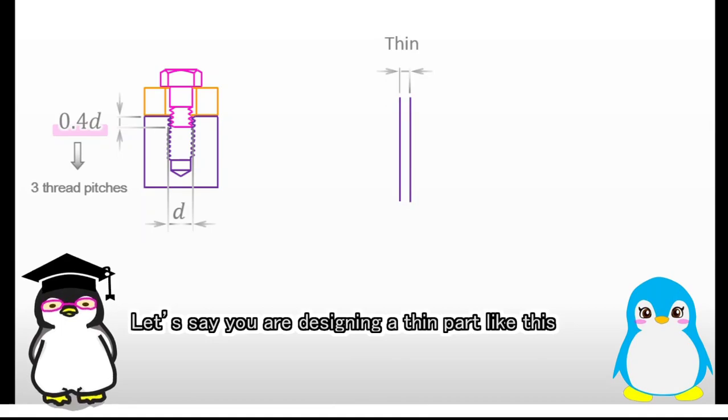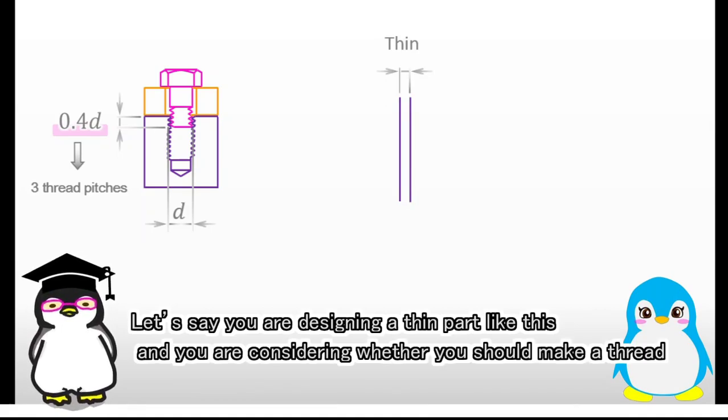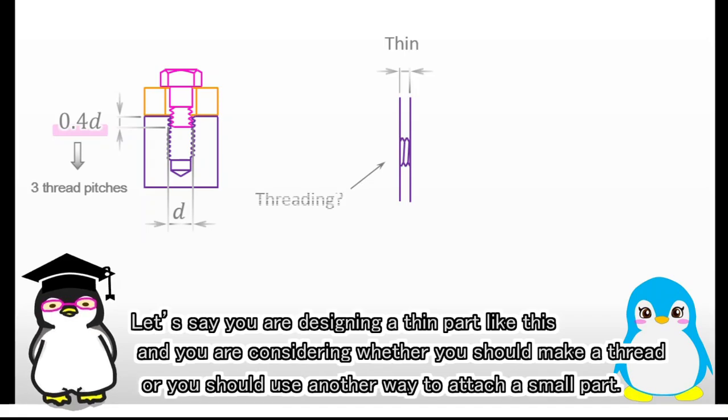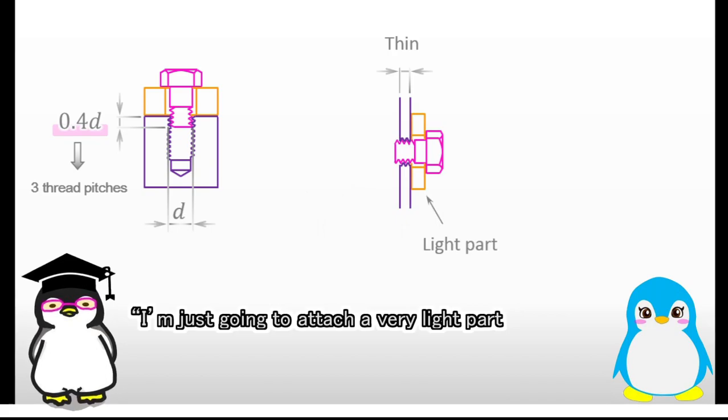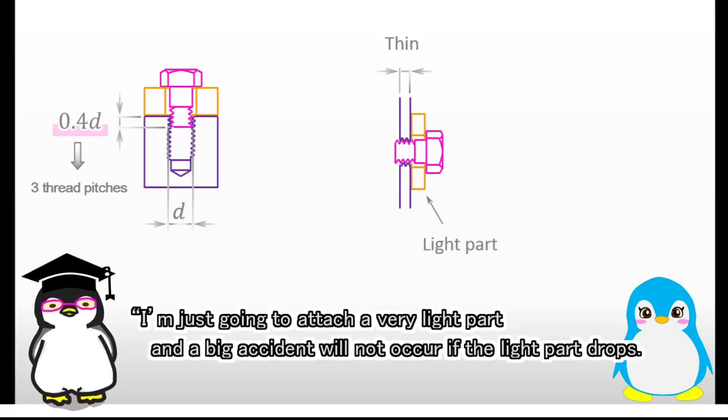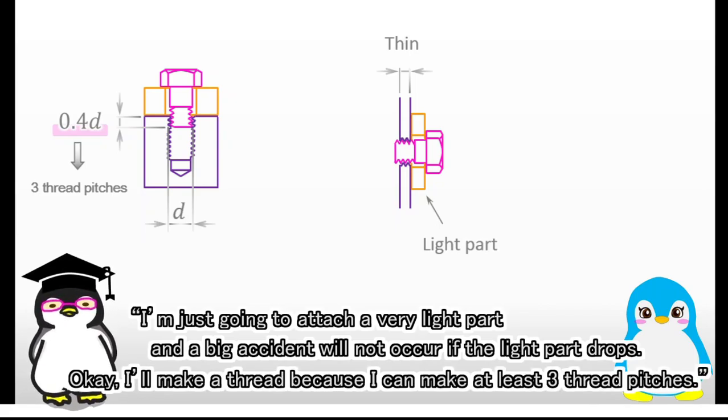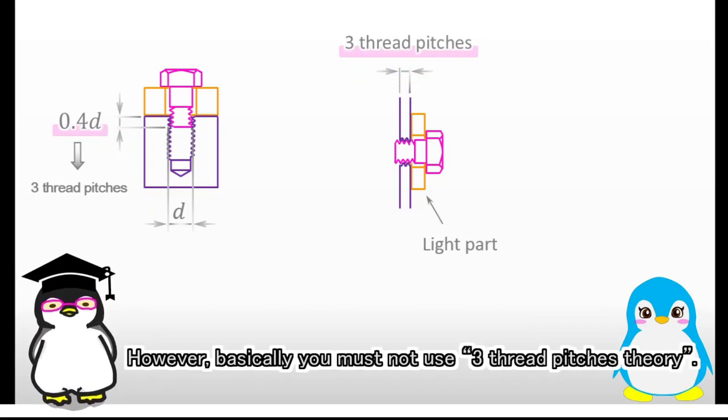Let's say you are designing a thin part like this, and you are considering whether you should make a thread or use another way to attach a small part. I think it's okay if you make a decision like this: I'm just going to attach a very light part, and a big accident will not occur if the light part drops. Okay, I'll make a thread because I can make at least 3 thread pitches. However, basically, you must not use 3 thread pitches theory.